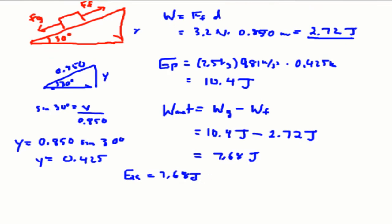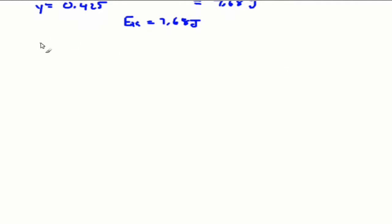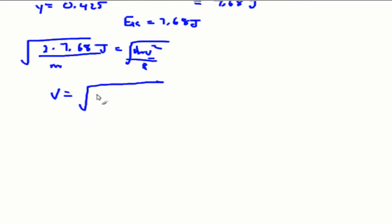We know that the kinetic energy, 7.68 joules, is equal to mv squared over 2. So now we're going to solve for v. Multiply both sides by 2 to cancel out the 2. Divide both sides by mass to cancel out the mass. And square root both sides to solve for v. So velocity will be equal to square root of 2 times 7.68 joules divided by the mass of 2.5.